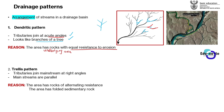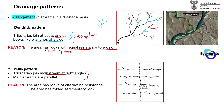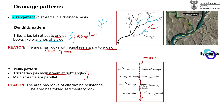We also have the trellis pattern. In a trellis pattern, tributaries join the mainstream at a right angle. This is the description of how the pattern looks. If we look at a practical image, the mainstream is going in one direction, and the tributaries — the smaller streams — join the mainstream at 90-degree angles.